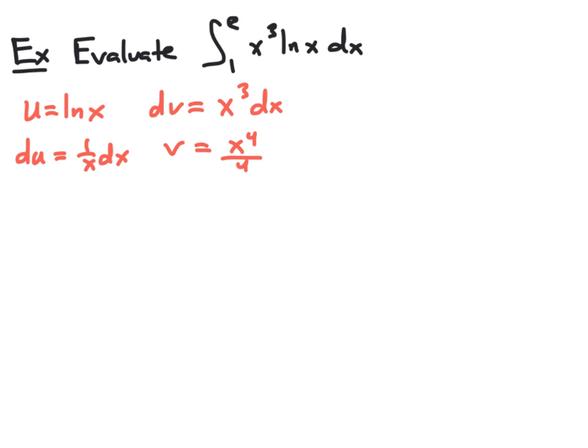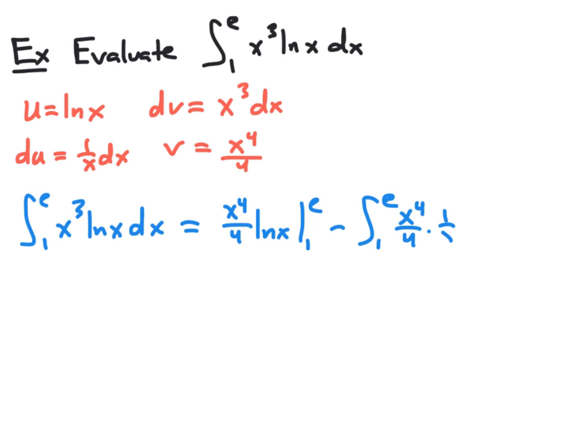Now applying the integration by parts formula, we see that the integral from 1 to e of x cubed natural log of x dx will be u times v, which will be x to the 4th over 4 natural log of x evaluated from 1 to e, minus the integral from 1 to e of v du. So we have x to the 4th over 4 times 1 over x dx.